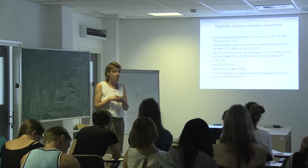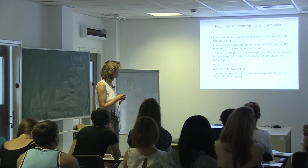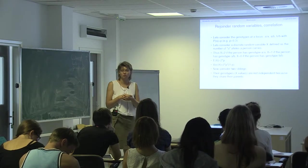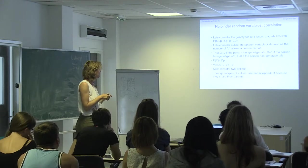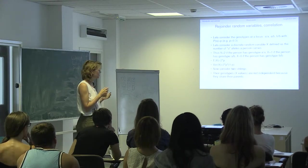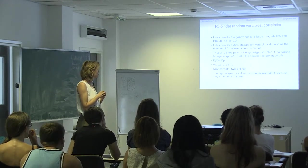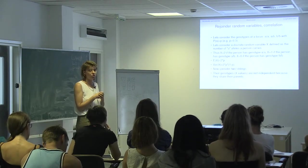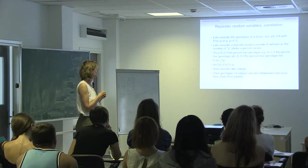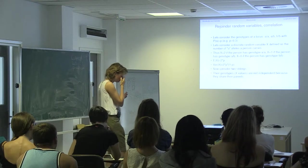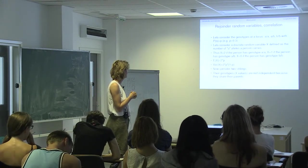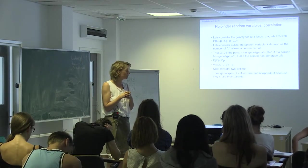Then we discussed in the first lecture about random variables, probabilities, and correlation. Suppose we have genotypes at a locus with two alleles — you can be AA, AB, or BB. We define a random variable X. A random variable is a quantitative variable with numbers, and if it's discrete, you can count them. We define X as the number of A-alleles a person has. X is two if the person has two A-alleles, X is one if the person is heterozygous, and X is zero if the person has genotype BB.